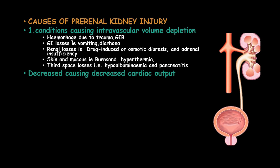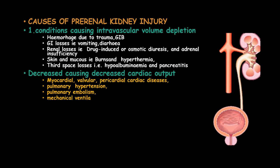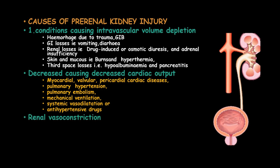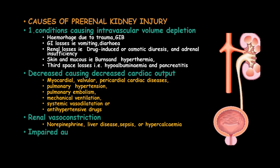Conditions causing decreased cardiac output include myocardial infarction, valvular and pericardial cardiac diseases, pulmonary hypertension, pulmonary embolism, and mechanical ventilation. Systemic vasodilation from anti-hypertensive drug usage, conditions leading to renal vessel constriction such as norepinephrine, liver disease, sepsis, or hypercalcemia can also cause pre-renal kidney injury, as can impaired autoregulation from angiotensin-converting enzyme inhibitors in renal artery stenosis.